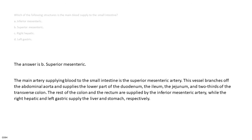The answer is b. Superior mesenteric. The main artery supplying blood to the small intestine is the superior mesenteric artery. This vessel branches off the abdominal aorta and supplies the lower part of the duodenum, the ileum, the jejunum, and two-thirds of the transverse colon. The rest of the colon and the rectum are supplied by the inferior mesenteric artery, while the right hepatic and left gastric supply the liver and stomach, respectively.